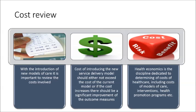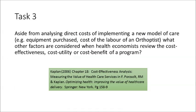Health economics is the discipline dedicated to determining the costs of health care, including things like the costs of models of care, cost of intervention, health programs, and so on. Task three requires you to read the section titled 'cost, cost effectiveness, cost utility, and cost benefit' in Kaplan's paper and answer this question: aside from analyzing direct costs of implementing a new model of care, what other factors are considered when health economists review the cost effectiveness, cost utility, or cost benefit of a program?